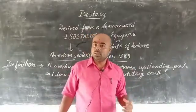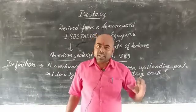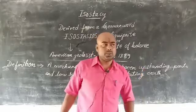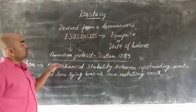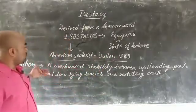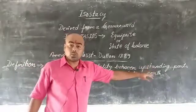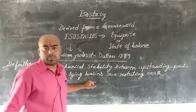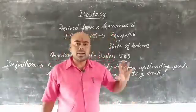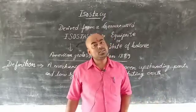The earth is made up of different types of landforms like mountains, plains, plateaus, basins, etc. The balance between them — how they balance themselves according to their density on the rotating earth — is called isostasy. A mechanical stability between upstanding parts like mountains and plateaus, and low-lying basins and plains on our rotating earth, is called isostasy.